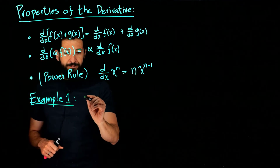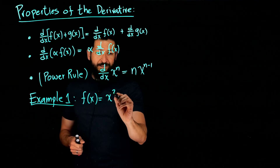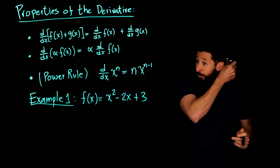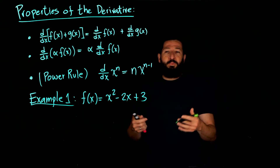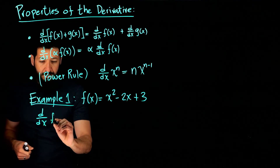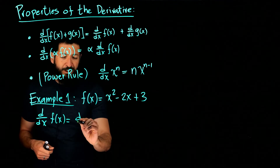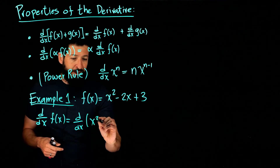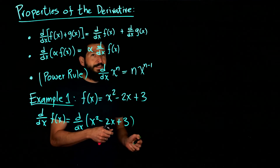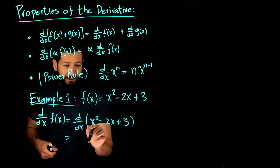Let's compute the derivative of f(x). This looks like the function we did by the limit definition previously. Now we don't do that long limit process — we use the three properties. I'm going to go in extreme detail so you can see how each property is used. It's going to look like a lot of work, but the next example will be much faster.